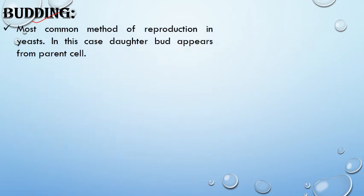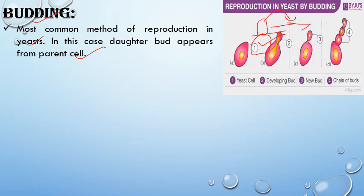The next process is budding. Budding is a sort of outgrowth from the main thallus, and that outgrowth gets separated from the parent body and acts as a full-fledged plant body. This method is present in case of yeast. A small outgrowth appears from the main parental cell, and that piece gets detached from the parental body and acts as a new individual cell.